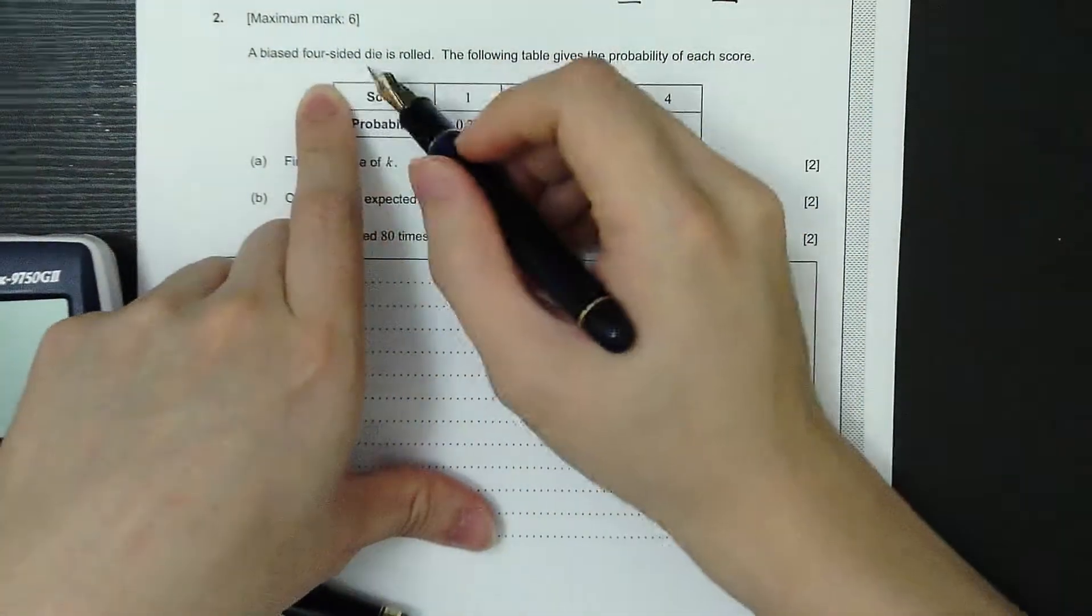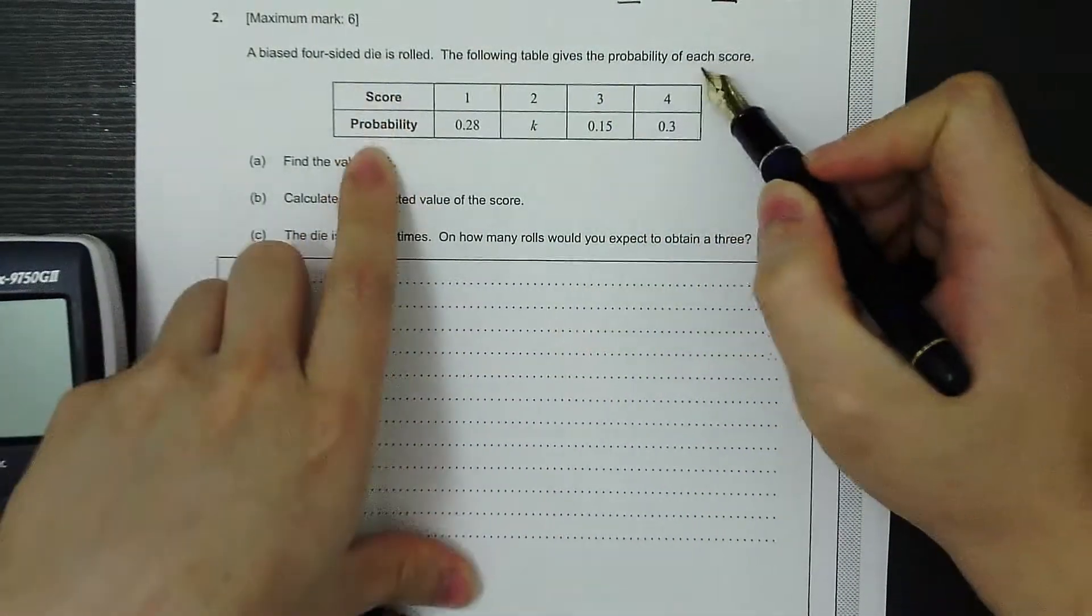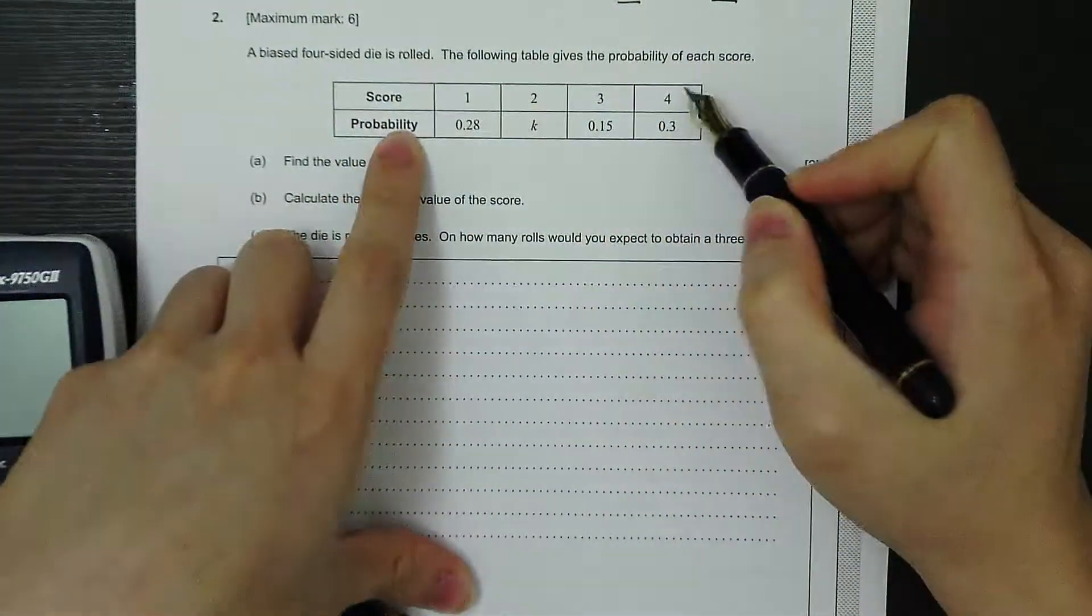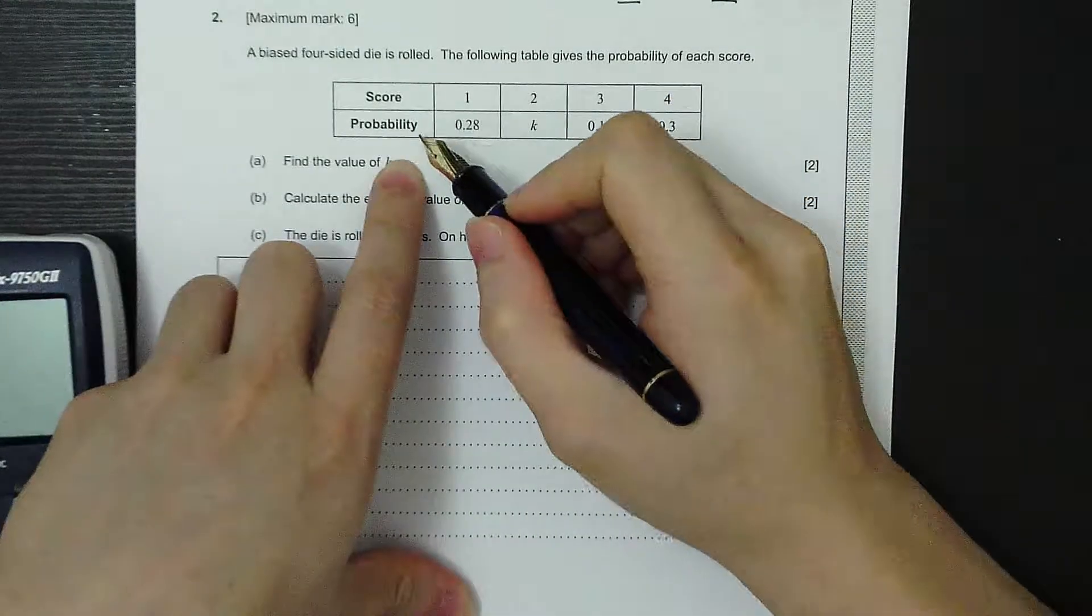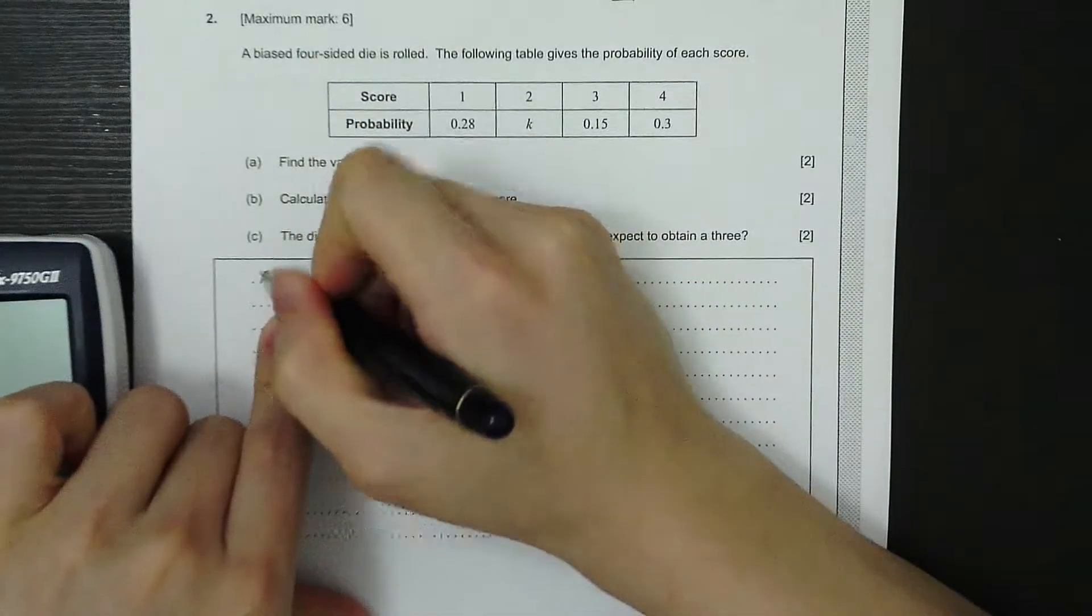A biased 4-sided die is rolled. The following table gives the probability of each score, so a score from 1 to 4, and the probability for each score is shown here. Part A, find the value of K.